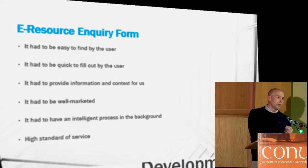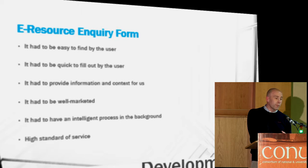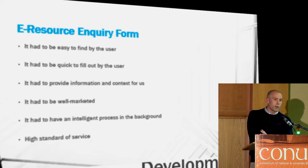It had to provide the information and context for us at the same time — things like whether you are on campus or off campus, what systems are being used — things that help us already draw some conclusions about the user's journey and where we can go to solve the problem. It had to be well marketed — hats off to the subject librarian team — it's always mentioned in training sessions, induction sessions and things like that. It also had to have an intelligent process in the background. The form is set up so that once the user hits submit, it submits to a hidden email address, and that creates a ticket in our campus service desk ticketing system. It goes into our eResources group, and we have a team on a rota every day, so it means there's always a quick turnaround. And a high standard of service — we try and get back to them very quickly, and even if somebody's looking for something we don't have, we try not to end with no.